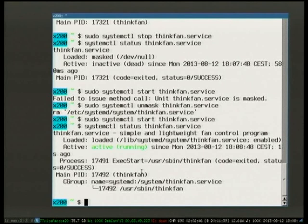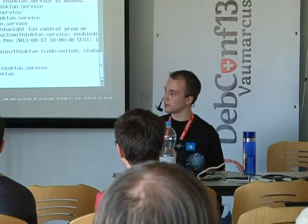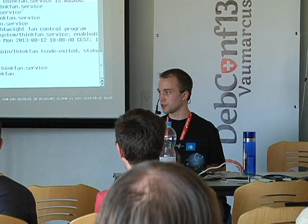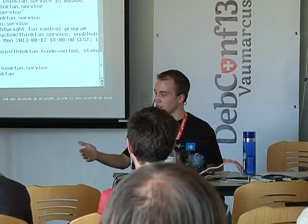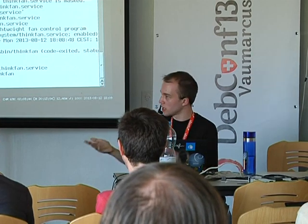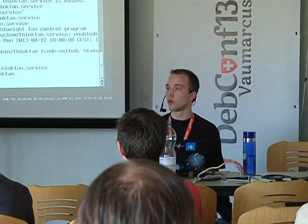Q: What's the difference between mask and disable? Disable just means don't start at boot, but you can still start, stop, restart, etc. Mask means really don't start this at all. Q: What does the status output mean with 'active (running)' or 'inactive (dead)'? It could be 'active (exited)' — that would be the case for oneshot services that forked one command which exited, but the unit is still considered active because the command succeeded.